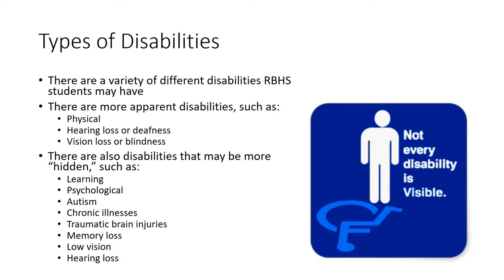A psychological disability is another type of disability that is often invisible and sometimes begins during college. Some examples are Generalized Anxiety Disorder, Depression, Bipolar Disorder, Obsessive Compulsive Disorder, Post Traumatic Stress Disorder, Schizophrenia, and Eating Disorders. Each of these psychological disabilities has its own symptoms, which may vary for each person. Chronic illnesses such as diabetes, lupus, cancer, fibromyalgia, and others may be apparent or hidden depending on the severity of the illness.